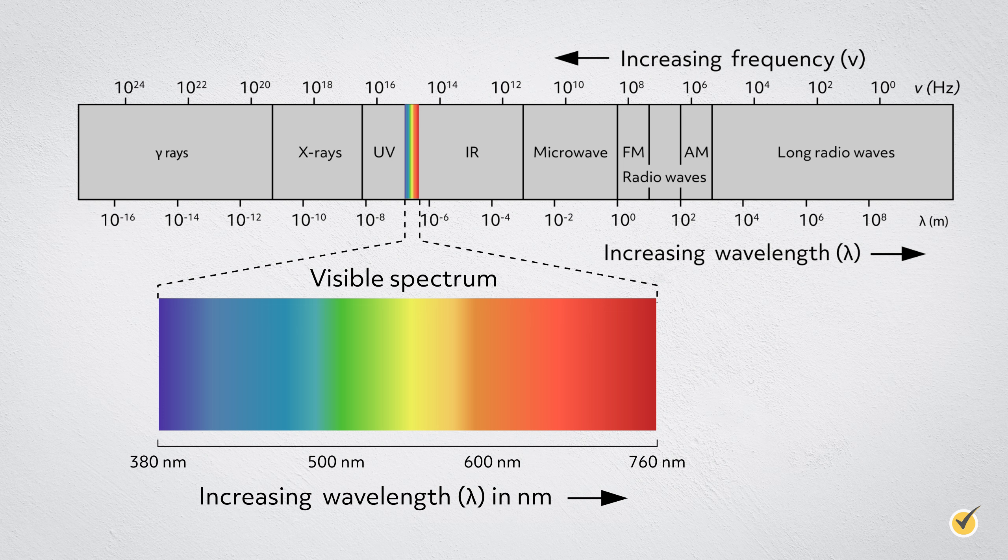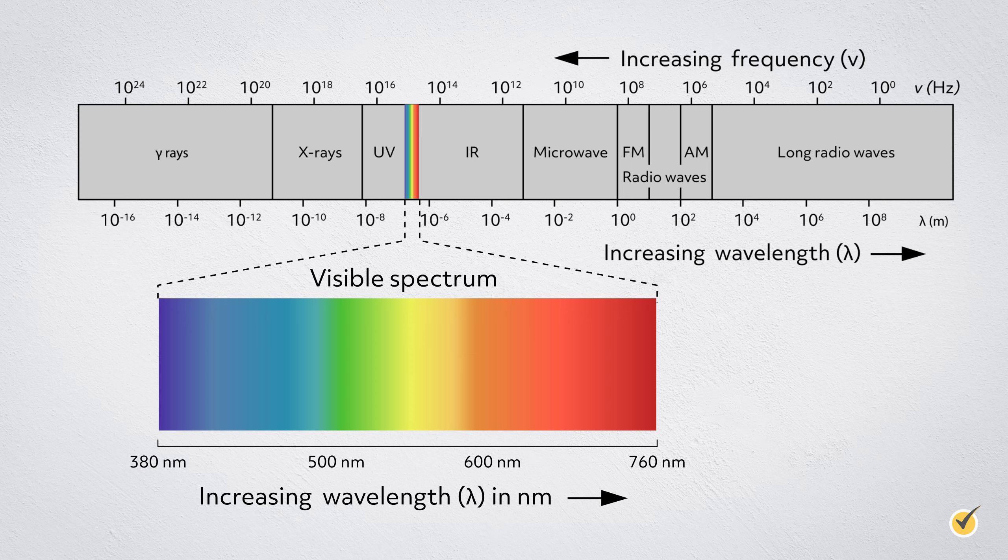We don't usually see color as individual wavelengths of light in our daily lives, except with special tools like lasers that can isolate a specific wavelength. Instead, we see combinations of wavelengths that our brains process as specific colors. The light from the sun is called white light, and it contains all of the wavelengths of visible light at approximately equal intensities.